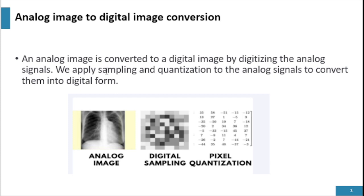An analog image is converted to a digital image by digitalizing the analog signals. For this we use the sampling and quantization process, in which we convert analog signals to a digital form.